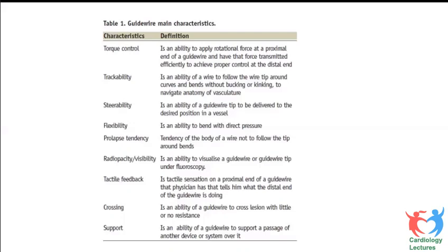Radio opacity and visibility are very important, especially for complex lesions or chronic total occlusions. You need to see what's happening to the tip — whether it's in the lumen, has migrated outside, or become deformed. Good radio opacity aids visualization. Tactile feedback is also critical: when passing the wire from the proximal end, you need to feel what's happening at the tip where it contacts the vessel wall. Better feedback means less chance of perforation or dissections.